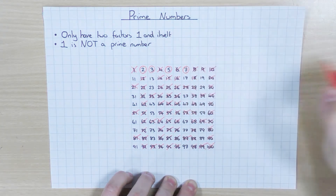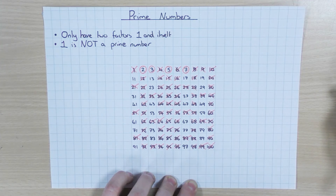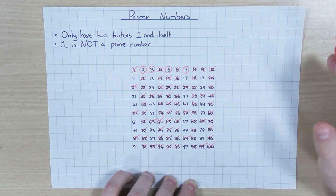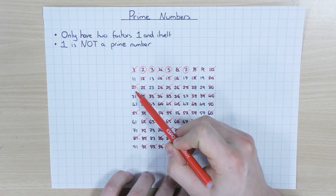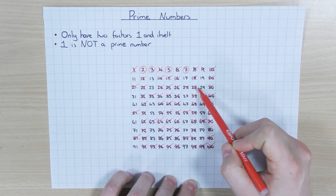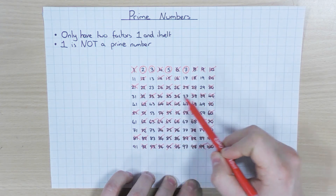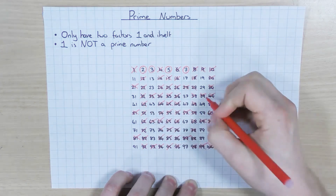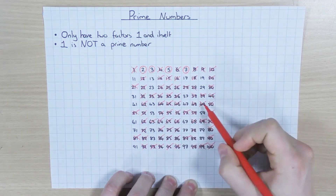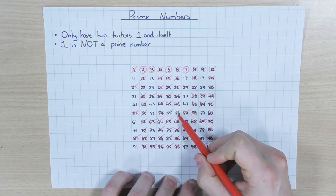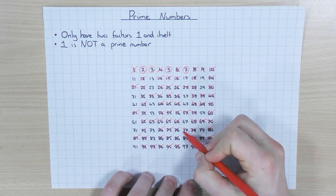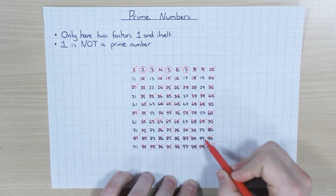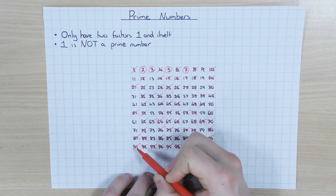And then the last one is 7. So 7 is a prime number — again, only got two factors, 1 and 7 — so that's going to be prime, and I'm going to get rid of everything in the 7 times table. So 14, 21, 28, 35, 42, 49, 56, 63, obviously 70, 77, I'm going to have 84, and I'm going to have 91.